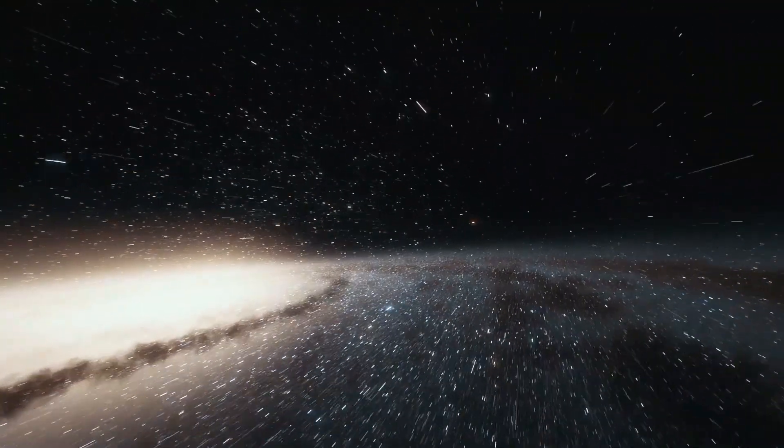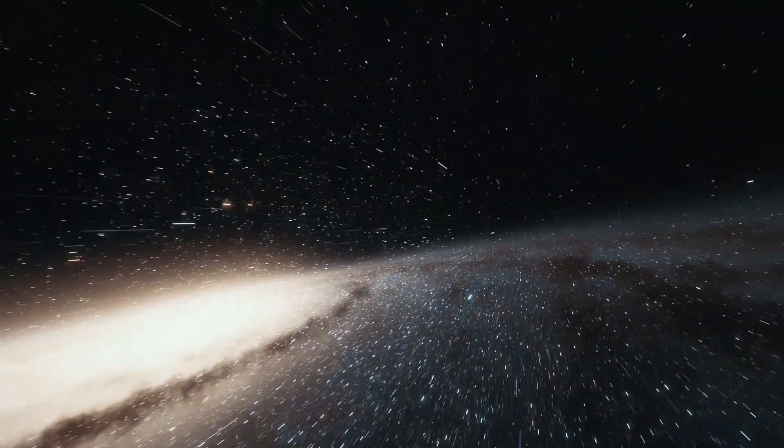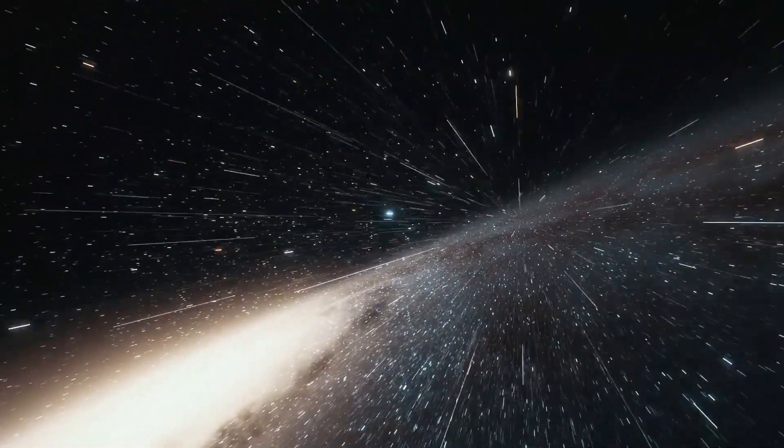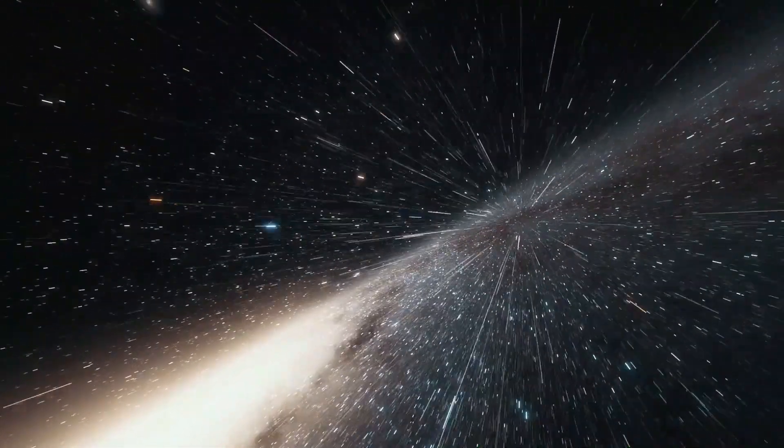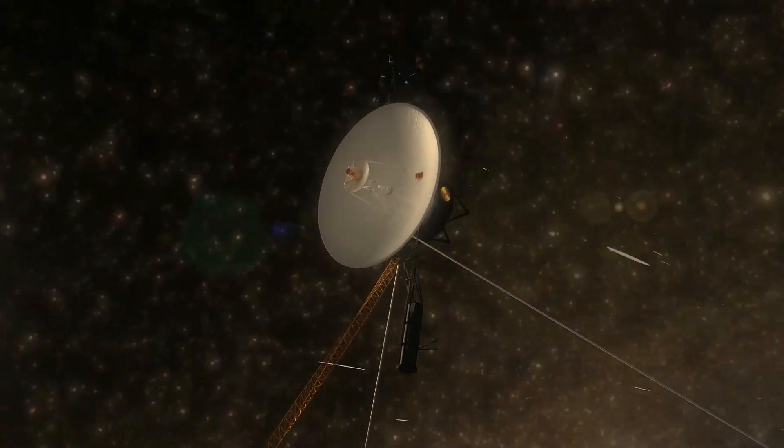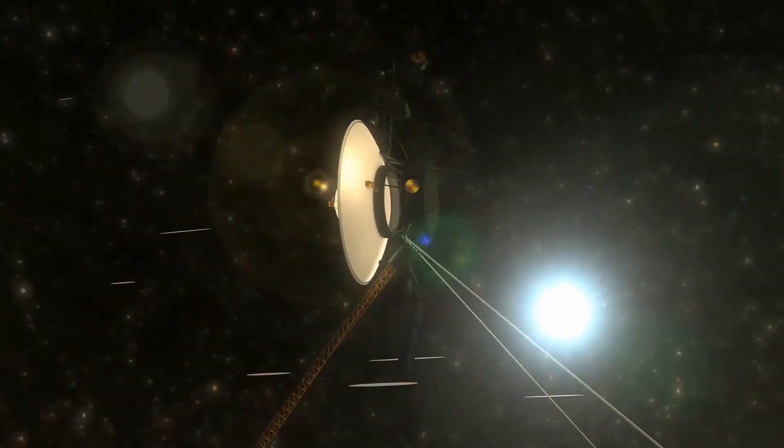It was confirmed that on August 25, 2012, Voyager 1 had become the first man-made object to exit the solar system and enter interstellar space. A few years later, it was also confirmed that Voyager 2 would enter interstellar space in 2018.